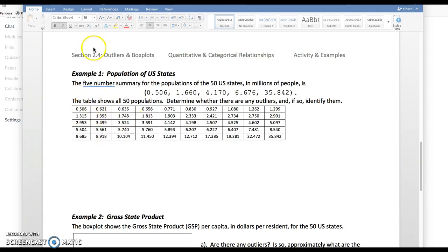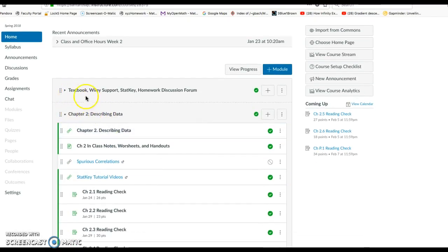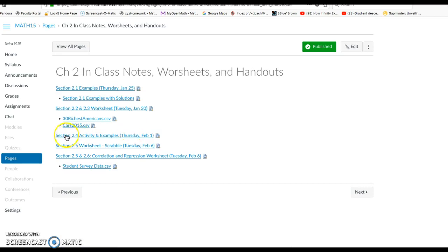If you want to download or open up this worksheet while we're going through this, go to our Canvas page, scroll down to the Chapter 2 module, and it's the Chapter 2 In Class Notes, Worksheets, and Handouts. I'm looking at the 2.4 activity examples. For this video, I'm going to skip the activity and just go over the two examples on the second page of that worksheet.